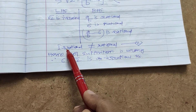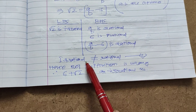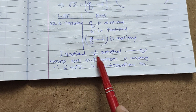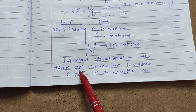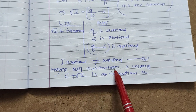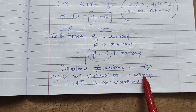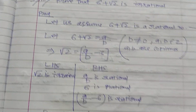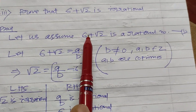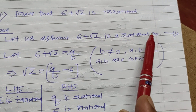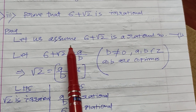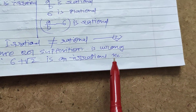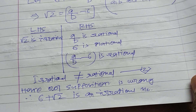The left-hand side has root 2, which is irrational. The right-hand side has a by b, which is rational, and 6 is rational, so rational minus rational is rational. Since irrational cannot equal rational, our supposition is wrong. Hence 6 plus root 2 is an irrational number.